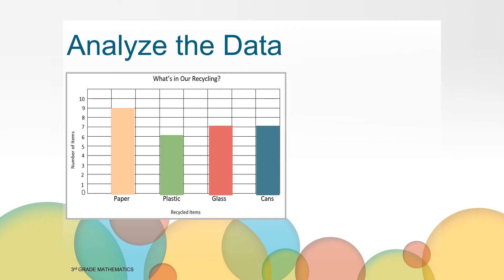Now that our data is organized in this bar graph, we can answer specific questions about what we notice. I'll read a statement about the recycling, and you use the data in the graph to tell whether it is a true or false statement. More plastic was recycled than paper. What do you think? True or false? You're right. This statement is false. What did you see in the graph to help you know that this was false? When you look at the bars for paper and plastic and compare them, plastic is lower than paper, with only six items, compared to paper's nine items.